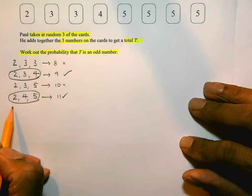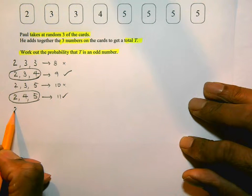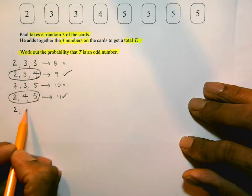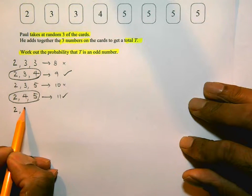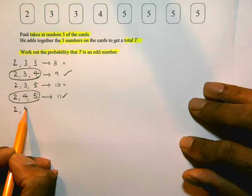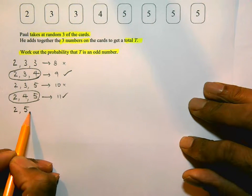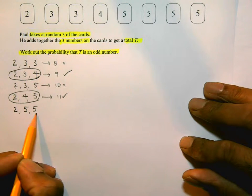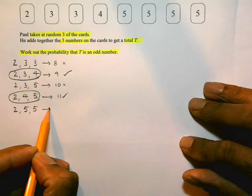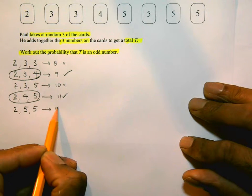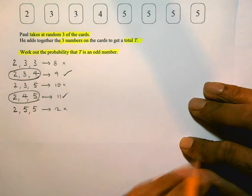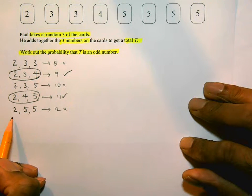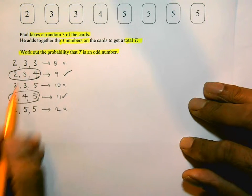Still with 2 first, there's only one 4, so going with a 5 second and a 5 third. That adds up to 12, which is even, so I'm not interested in that particular one. That completes all combinations with 2 picked first.